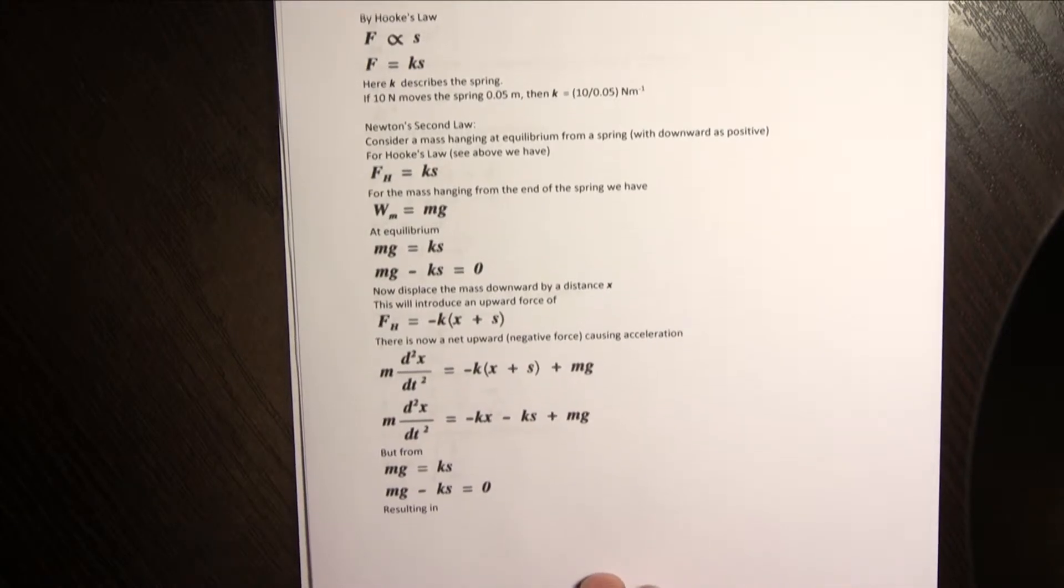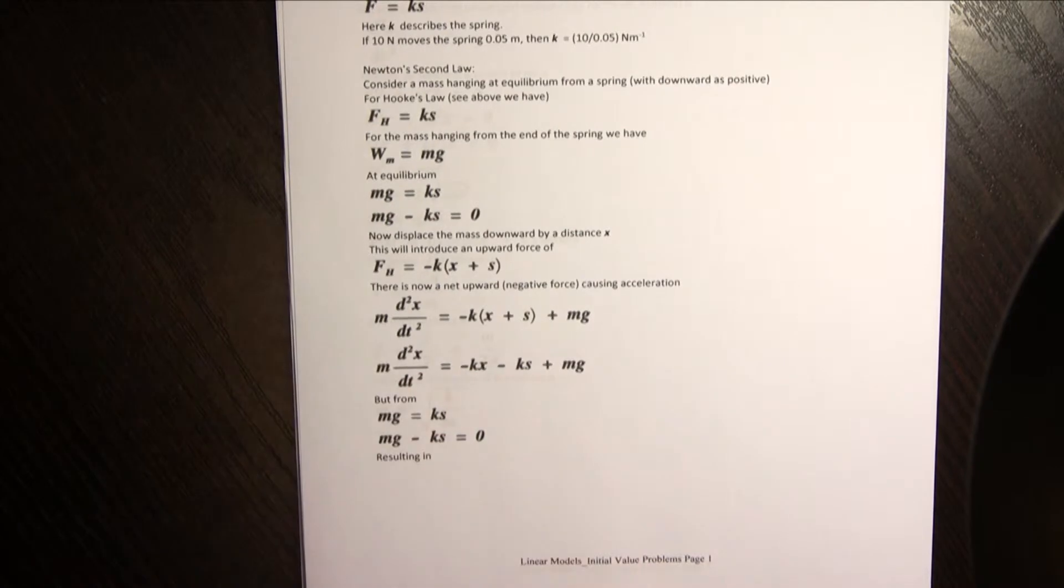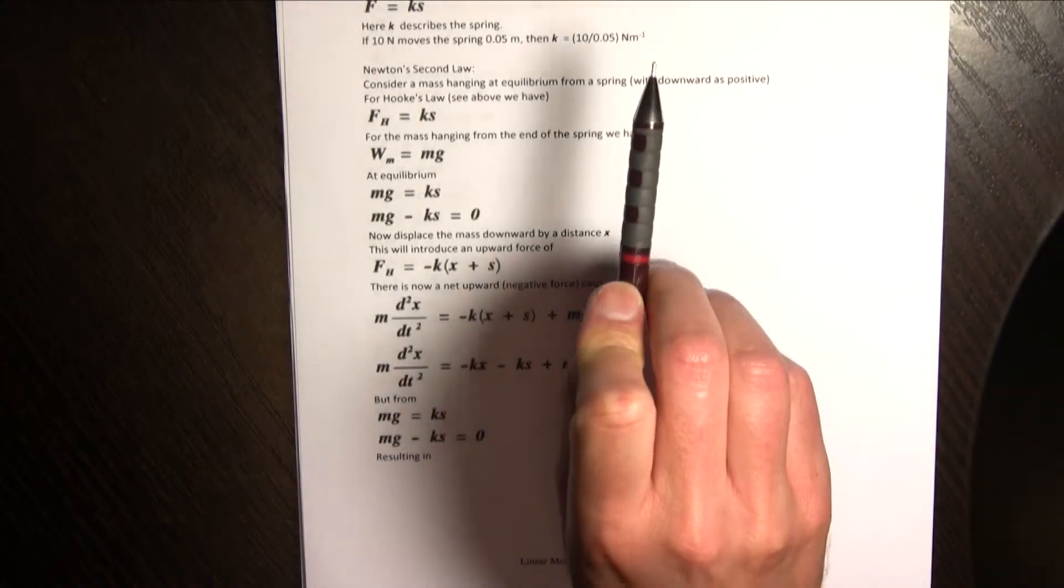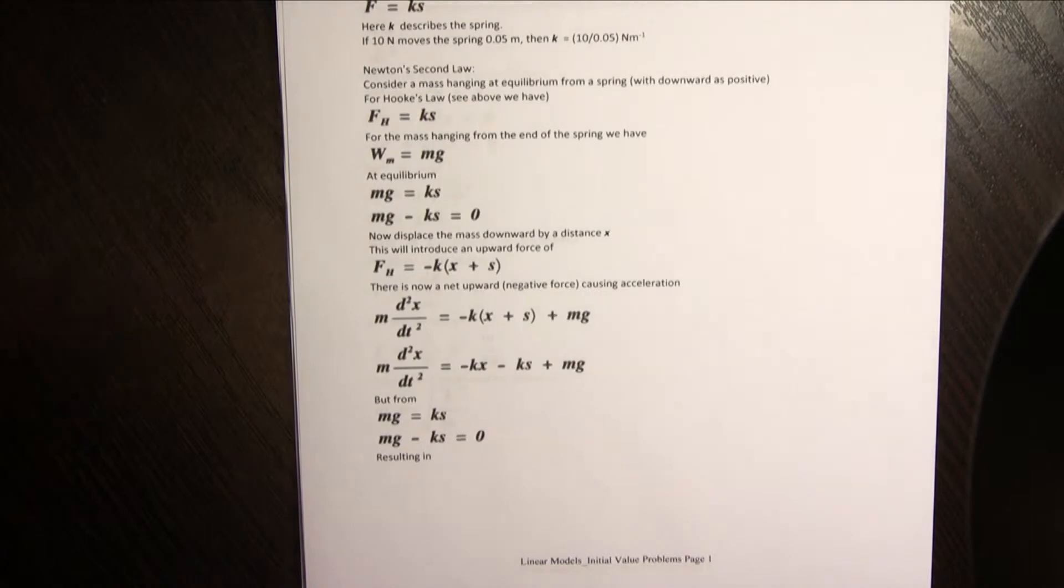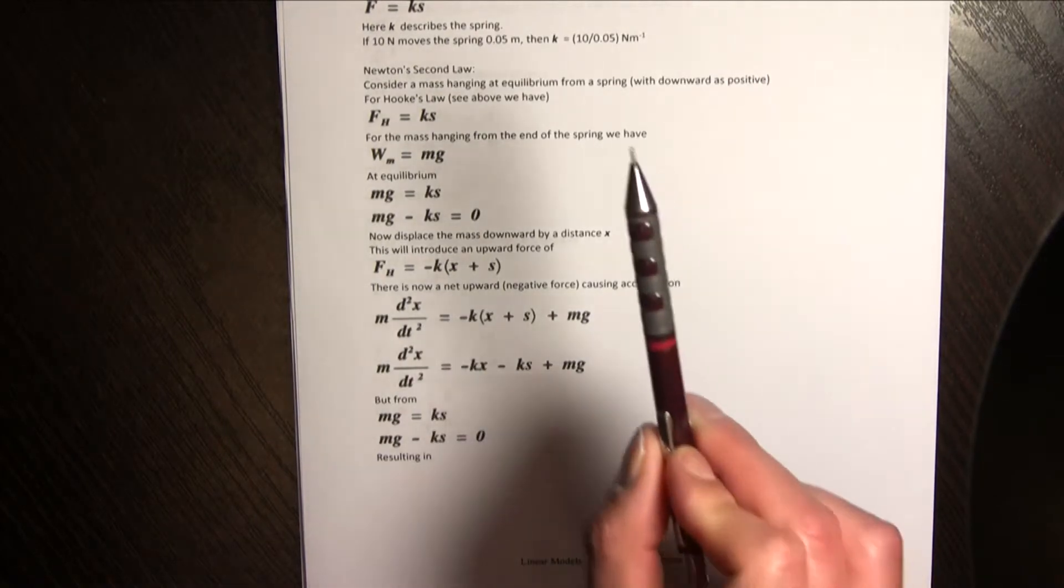To get to an equation for free undamped motion or oscillatory motion I need Newton's second law as well. Now let's just consider downwards, downwards towards the paper, as the positive direction and as you can see we're calling this up and down motion x in these examples.